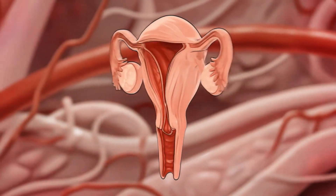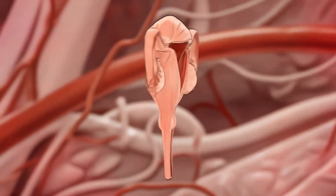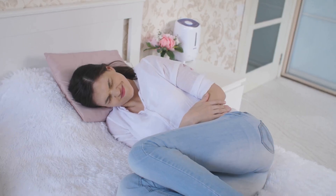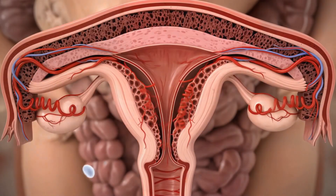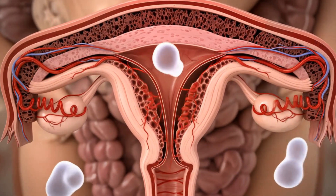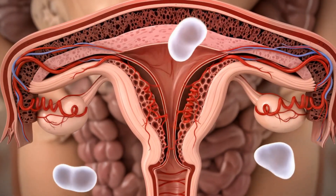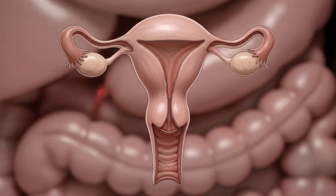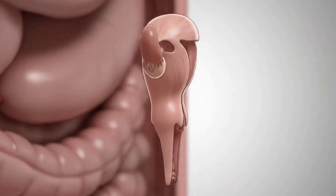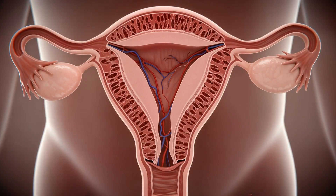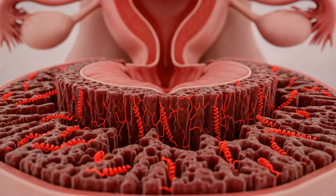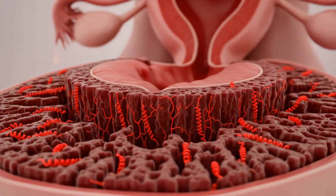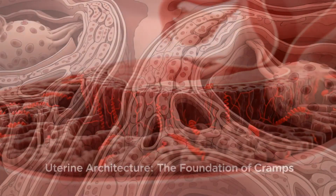I'm excited to explore the intricate world of period cramps with you today. Period cramps, or dysmenorrhea, are caused by rhythmic contractions of the uterus during menstruation. The physiological process behind them is complex and highly coordinated. We'll explore the fascinating anatomy, physiology, and pain science behind this monthly experience.